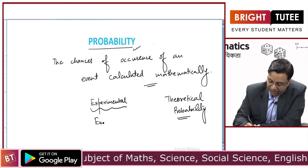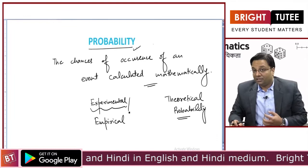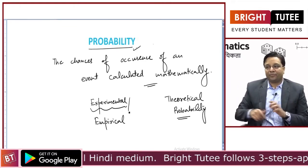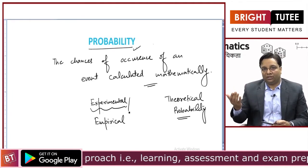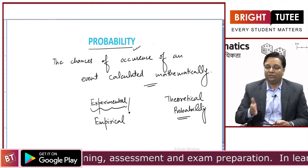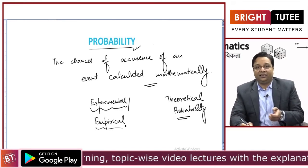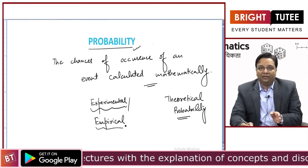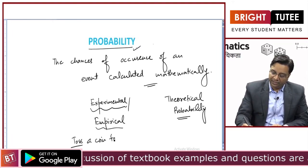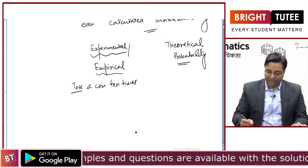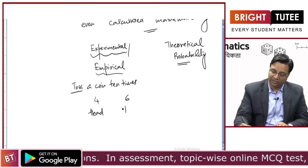Experimental probability is also known as empirical probability. What is experimental or empirical probability? Let us say you toss a coin — the possible outcomes are either head or tail. If you toss the coin 10 times, let us say it showed head 4 times and tail 6 times.